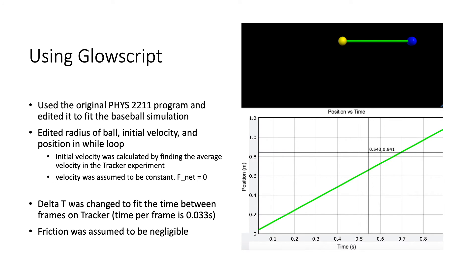Using GlowScript, I took the original Physics 2211 program we were given and edited it to fit the baseball simulation. I edited the radius of the ball along with the initial velocity and the position in the while loop. I got the initial velocity from finding the average velocity in the observed movement in Tracker. So I took the final position minus the initial position over the change in time, and that ended up equating to 1.213 meters per second. I also assumed that the velocity was constant, so the average velocity ended up being the total constant velocity throughout the program.